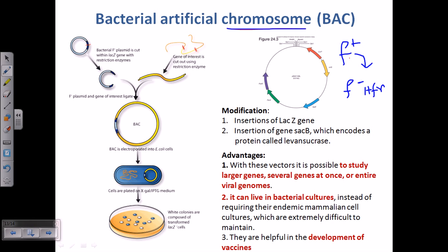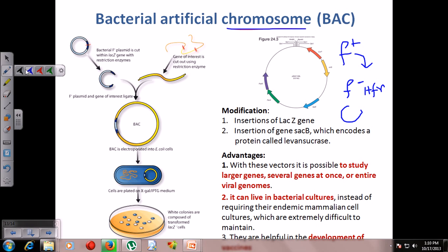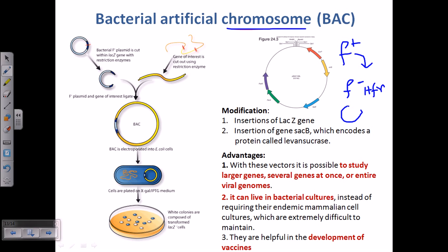When F+ donates to F- or HFR bacteria, sometimes only a small segment of F+ DNA is transferred — not the full genome. The chromosomal DNA of the recipient bacteria then conjugates with this small stretch of incoming F+ DNA. The resulting bacterial cell is called an F prime (F') bacterial cell.